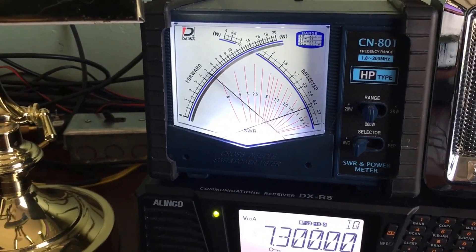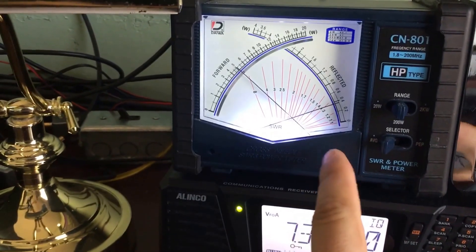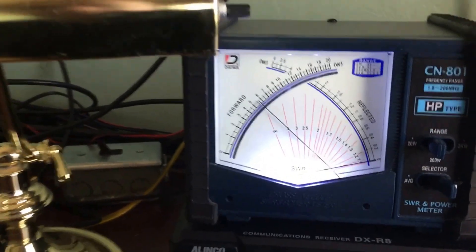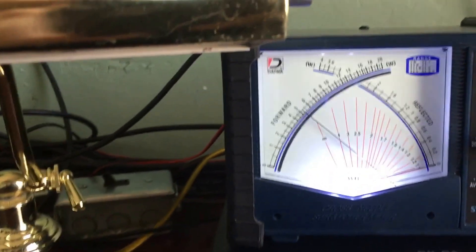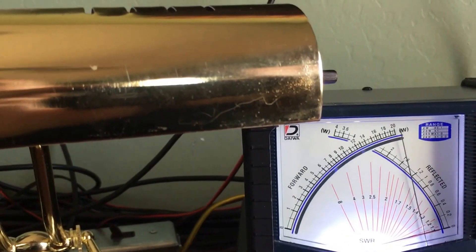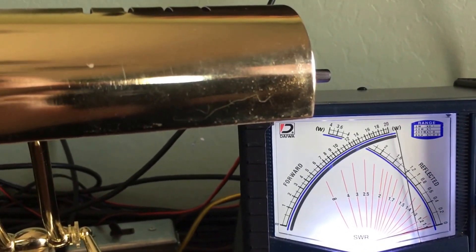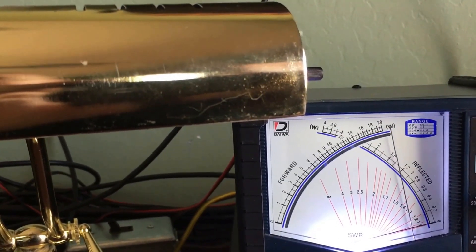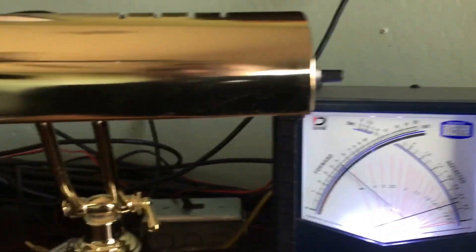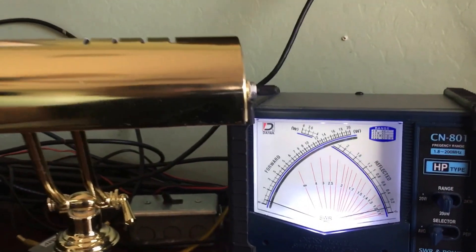There's 50 watts carrier and I'll push it over to PEP and speak into the microphone. This is KA1TDQ Kilo Alpha 1 Tango Delta Queen testing. So that's a little over 200 watts peak.